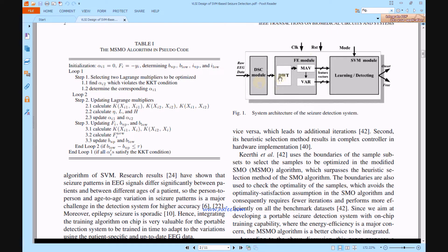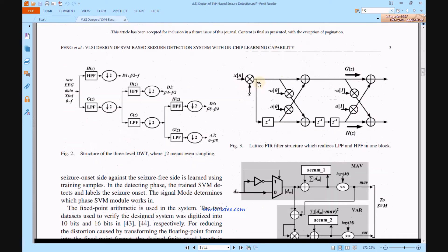This FE model has a DWT. The first initial thing is DWT, called Figure 2, a 3-level DWT. This DWT has a high pass filter and a low pass filter. The high pass filter and low pass filter structure is given in Figure 3, the lactic FAR filter structure which realizes the LPF and HPF.